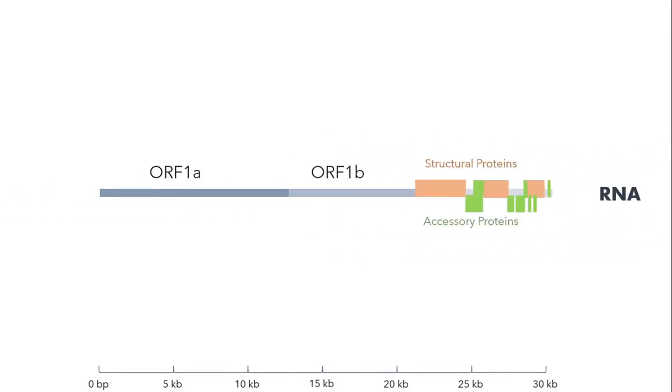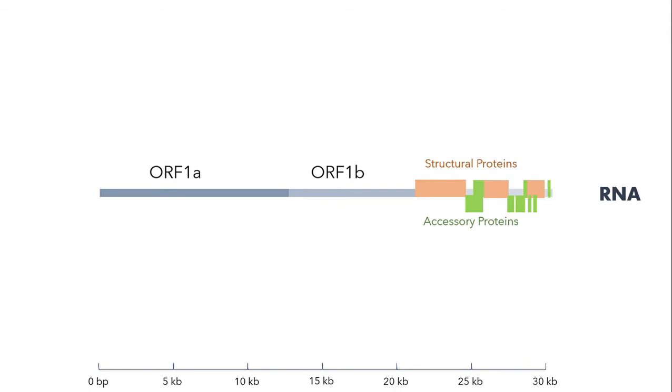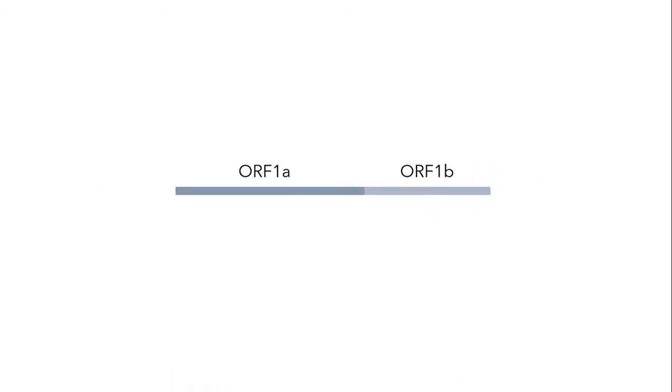The viral genome is composed mostly of two large open reading frames, ORF1A and ORF1B. For now, just these two are relevant. The viral RNA is positive-sense and single-stranded, which means it can directly bind to ribosomes that are happy to translate it, with no reverse transcription involved.